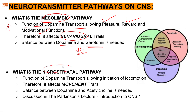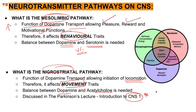The nigrostriatal pathway, which we covered in our Parkinson's lecture, governs movement and locomotion and involves the balance between dopamine and acetylcholine. Please visit our Parkinson's lecture and introduction to CNS pharmacology for more detail.